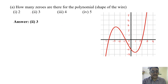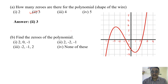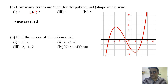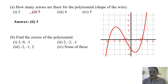Find the zeros of the polynomial. Where it intersects: first is 2, second is minus 1, and third is minus 4. So the zeros are 2, minus 1, and minus 4. The correct option is none of these.